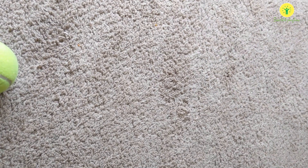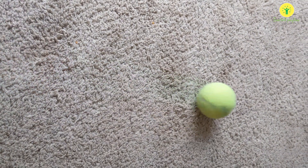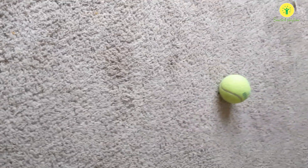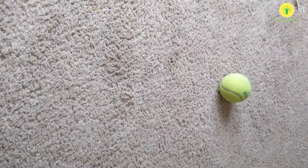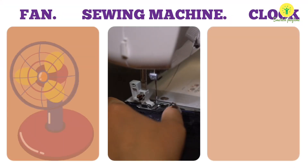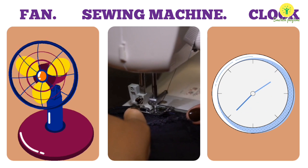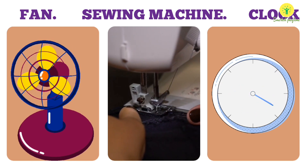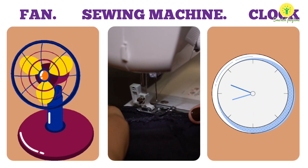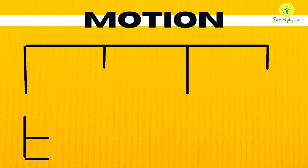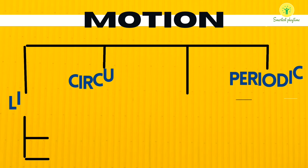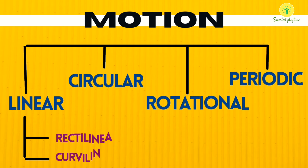When we roll a ball, it moves from point A to point B. But in case of a sewing machine, electric fan, or a clock, the whole body doesn't move from one place to another, but only a part of the body moves. Motion is broadly divided into four types: linear motion, circular motion, rotational motion, and periodic motion.